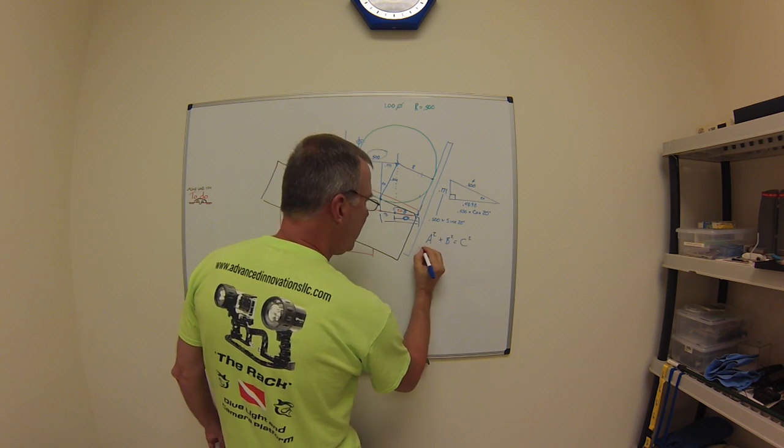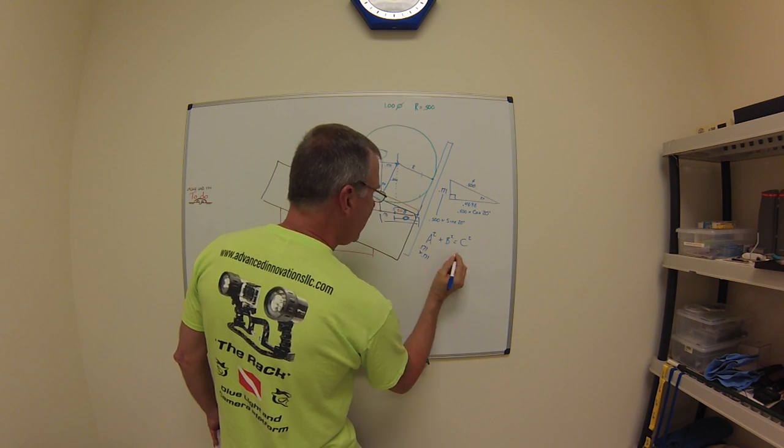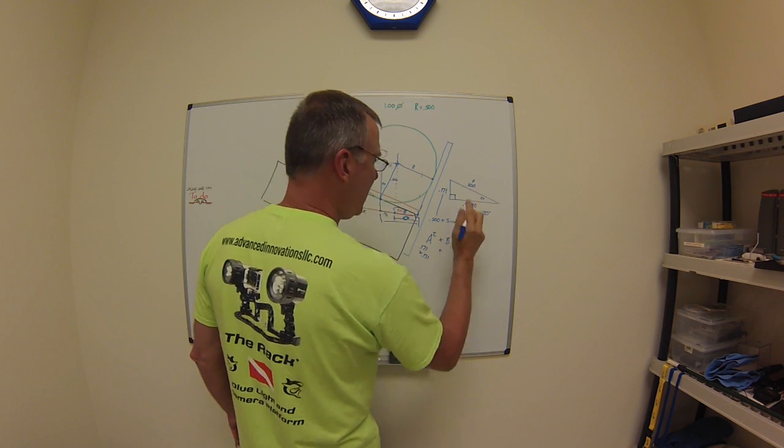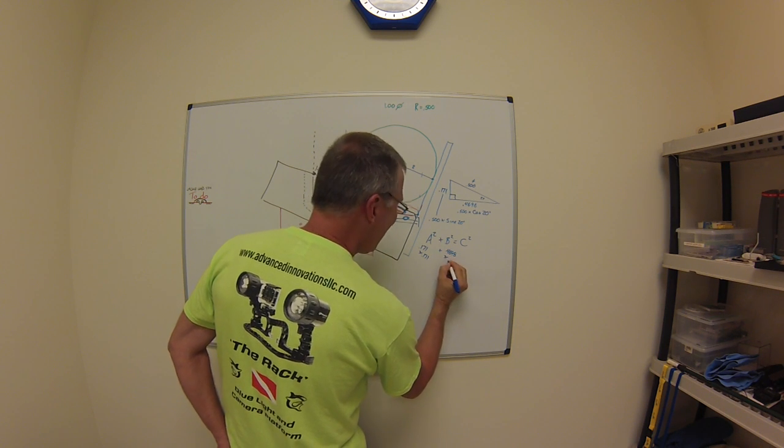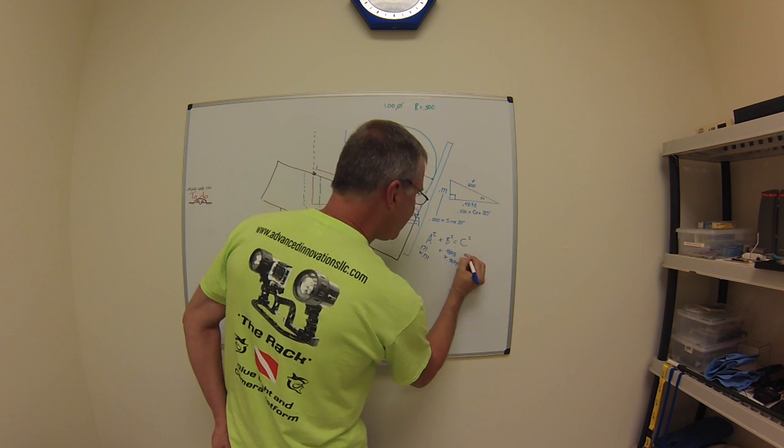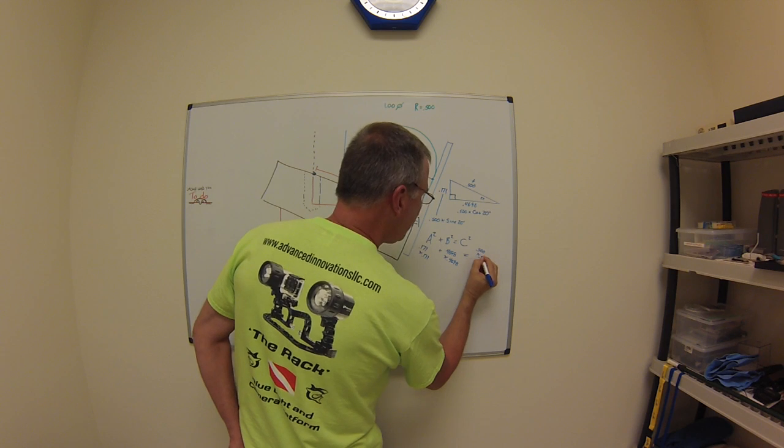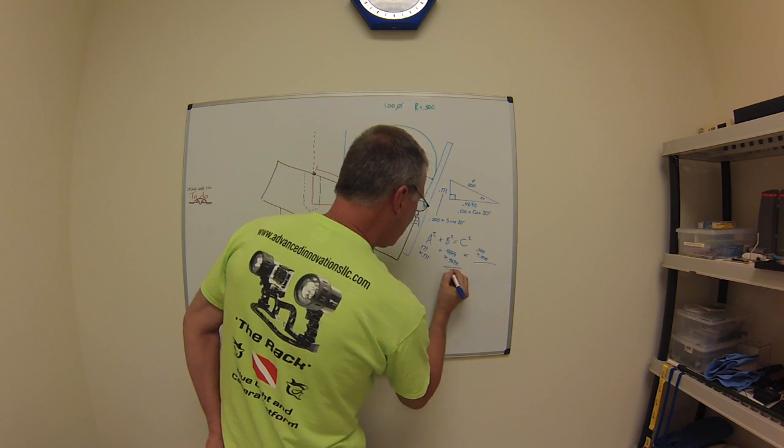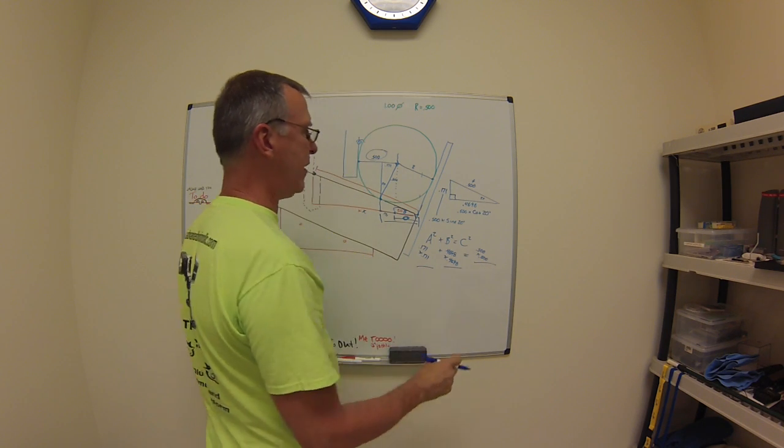0.171 times 0.171 plus 0.4698 times 0.4698 equals 0.500 times 0.500. a squared plus b squared equals c squared. Check it out.